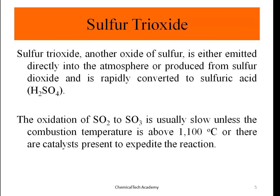On the other hand, we will have sulfur trioxide or SO3. SOx emission consists of SO2 and SO3 — sulfur dioxide and sulfur trioxide. SO3 is either emitted directly into the atmosphere or produced from sulfur dioxide, and is rapidly converted to sulfuric acid, H2SO4. The oxidation of SO2 to SO3 is usually slow unless the combustion temperature is above 1100 degrees Celsius or there are catalysts present to expedite the reaction.